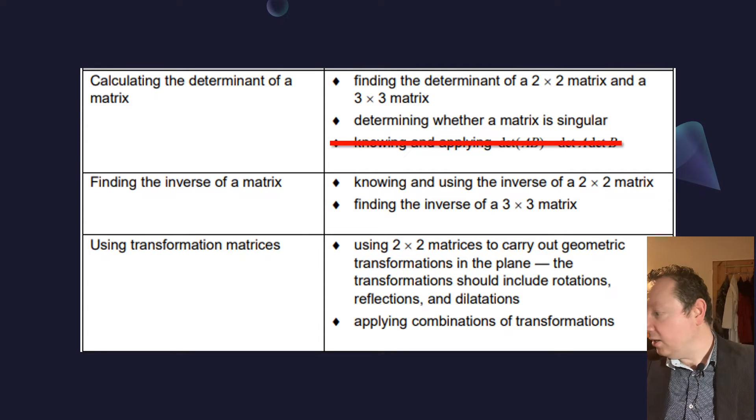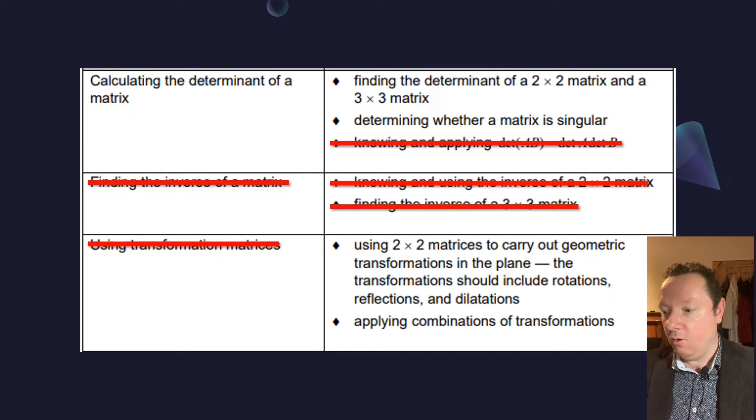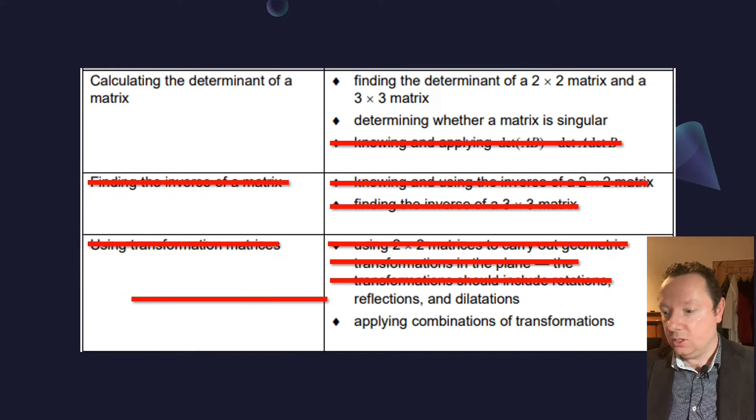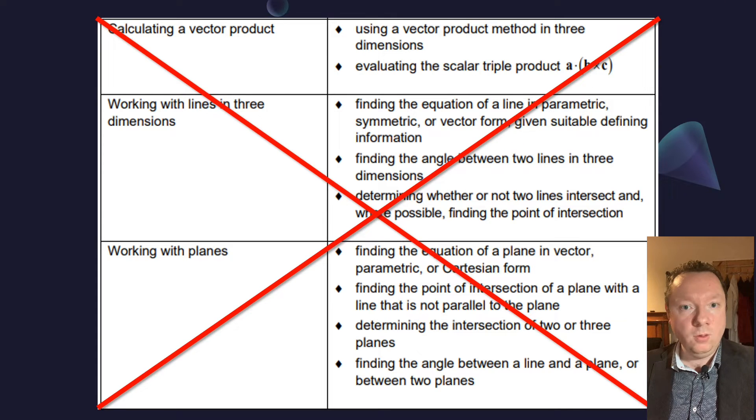Finding the inverse of a matrix is also out completely. You don't have to do any inverses and you don't have to do any transformation matrices at all as well. That is all gone. So most of the matrices is actually out. Vectors, there's no vectors this year at all, so let's just cross that out and move on.